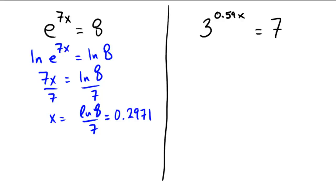And on the other hand, 3 to the 0.59x equals 7. 3 to the 0.59x equals 7.